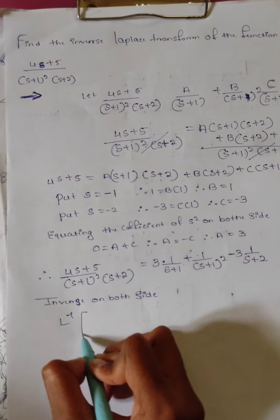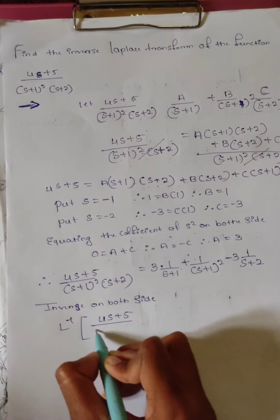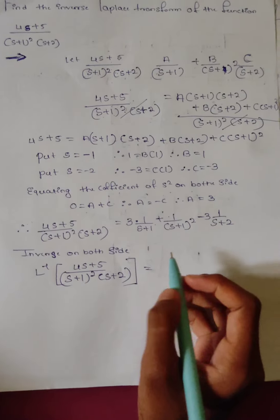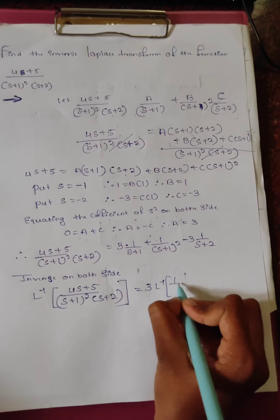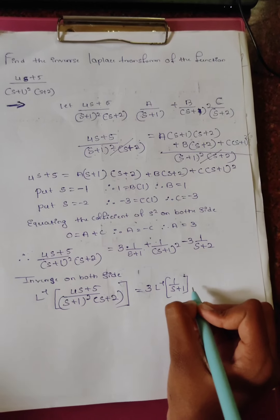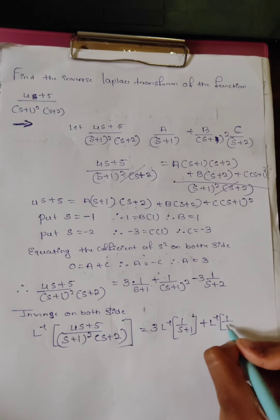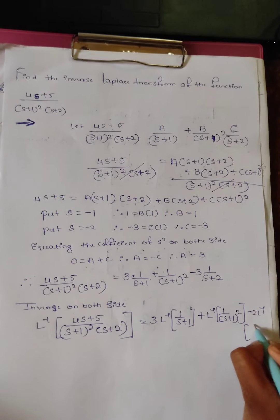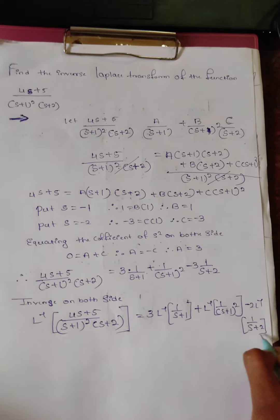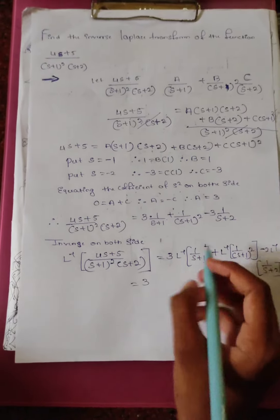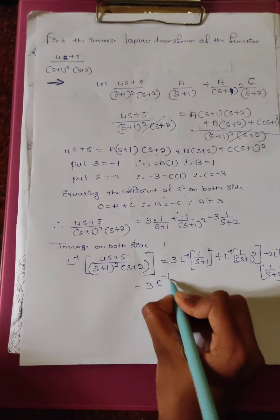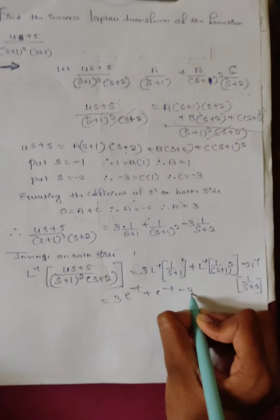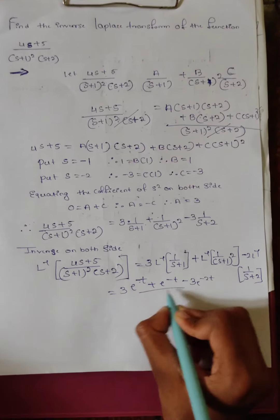Inverse Laplace of 4s plus 5 divided by (s plus 1) whole square times (s plus 2): 3 is constant; inverse of 1 upon (s plus 1); plus inverse of 1 divided by (s plus 1) whole square; minus 3 times inverse of 1 upon (s plus 2). Here, 3 as it is — using the standard inverse Laplace formula, the result is 3e raised to minus t, plus t·e raised to minus t, minus 3e raised to minus 2t. This is the required solution.